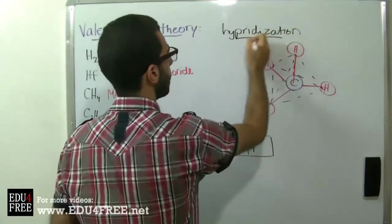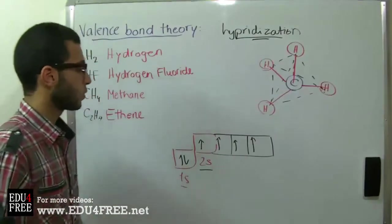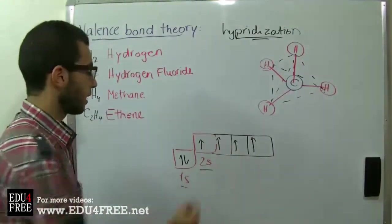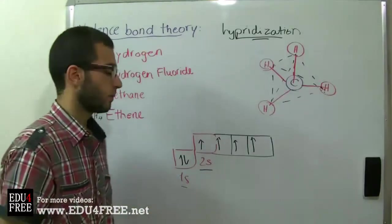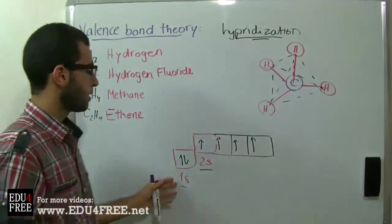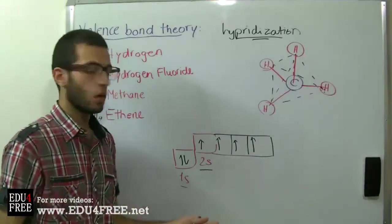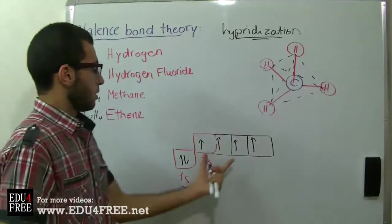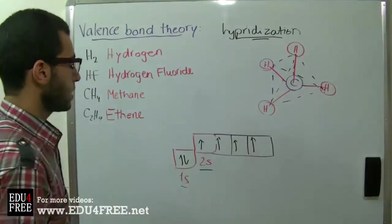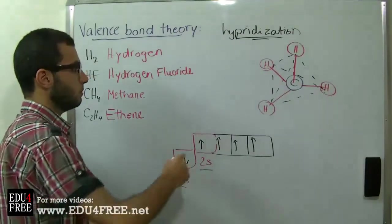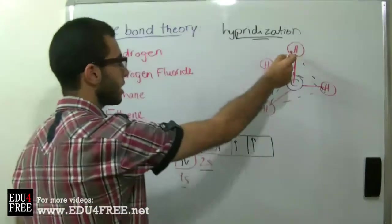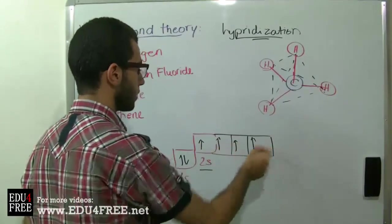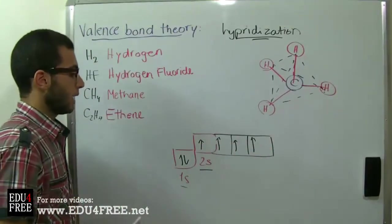This action is called hybridization. Hybridization takes place between orbitals of very near energy, like the 2s and the 2p sub-level. For example, between the 1s and the 2p no hybridization can take place. Each hydrogen atom can then make a covalent bond with each orbital.